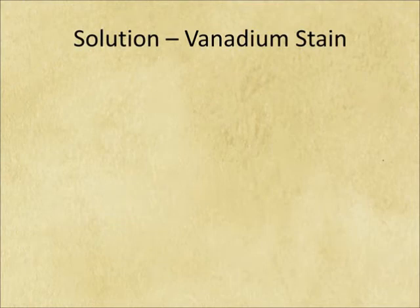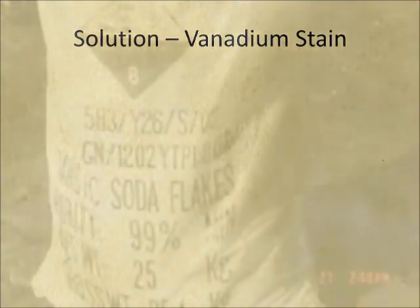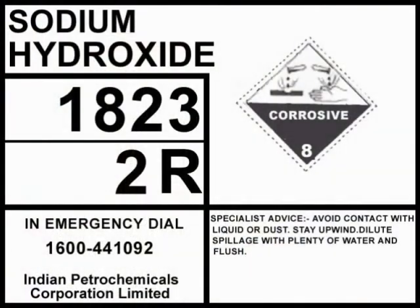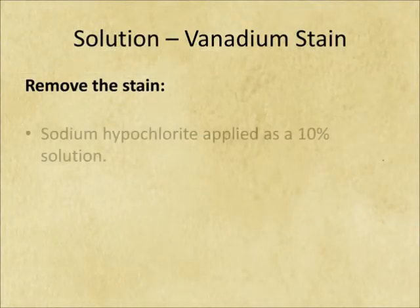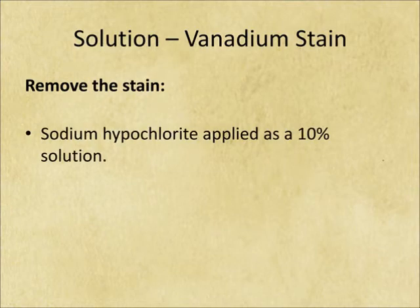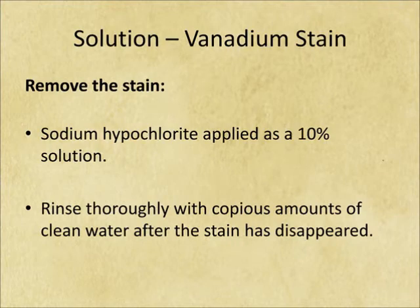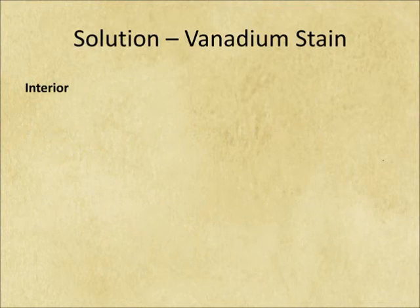To prevent vanadium stain we need to first remove the stain. The Australian standards recommend caustic soda and caustic potash applied as a 10% by weight aqueous solution. This is a very aggressive treatment, and sodium hydroxide is a very dangerous chemical — not to mention that its high alkalinity is very hard to neutralize. So instead of sodium hydroxide, use sodium hypochlorite applied as a 10% solution. This should be rinsed thoroughly with copious amounts of clean water after the stain has disappeared, to ensure the pH level is neutral before applying coatings.